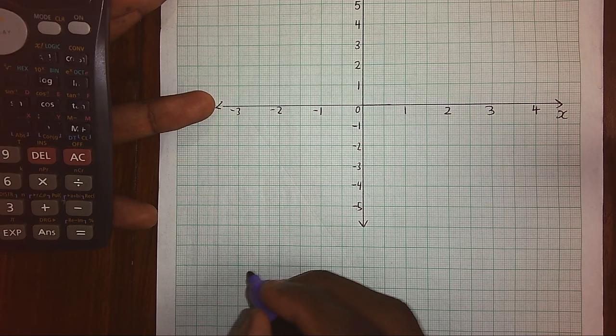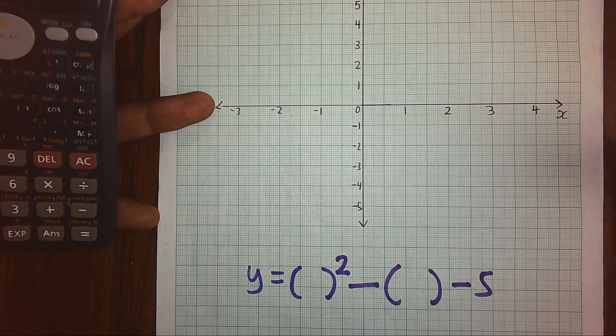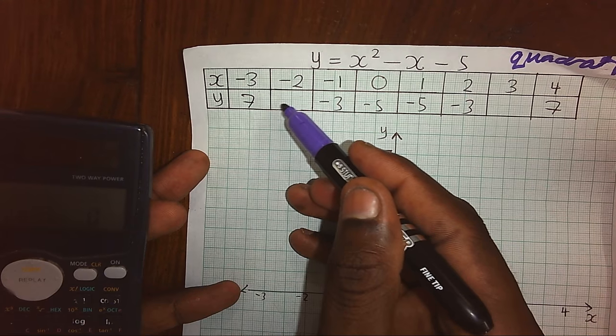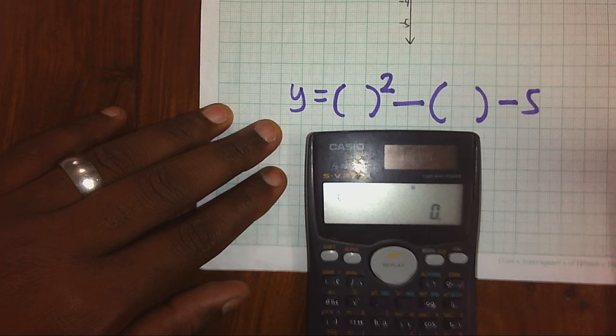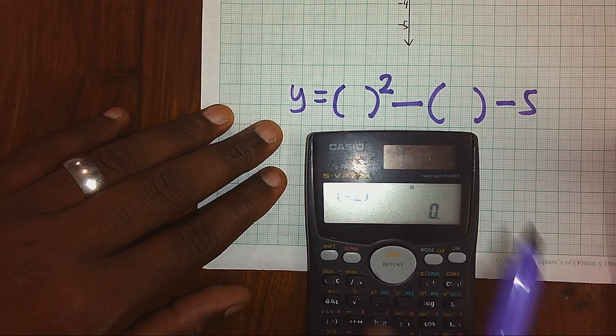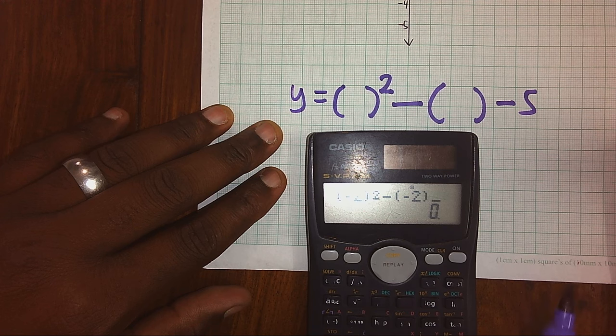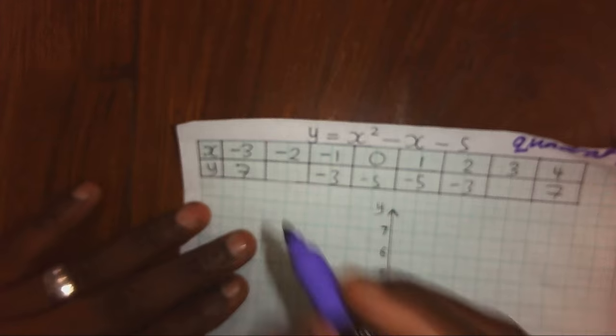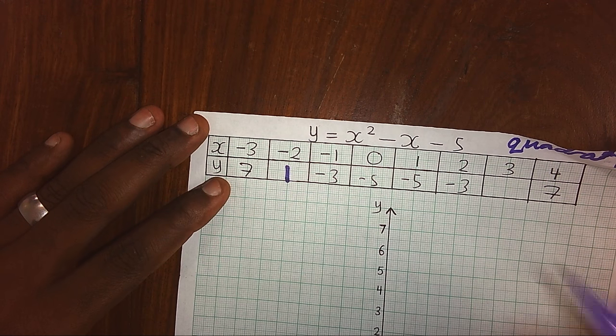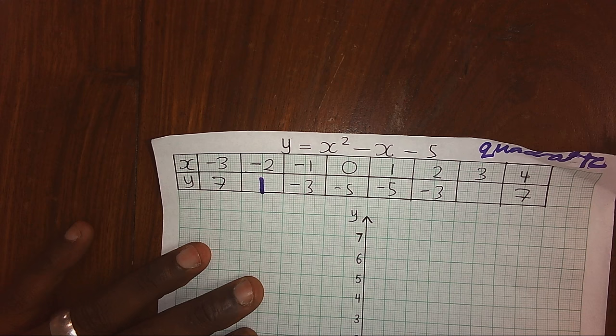If the table of values are not given, how do we find them? Look at the equation y equals x squared minus x minus 5. On the place of x, you will put the value in your calculator. Since x is negative 2, we shall get our calculator: open bracket, negative 2, close bracket, square, minus, open bracket, negative 2, close bracket, minus 5. That will give us 1. So we shall go to our table value and replace it with 1. We continue finding the other values using the calculator.